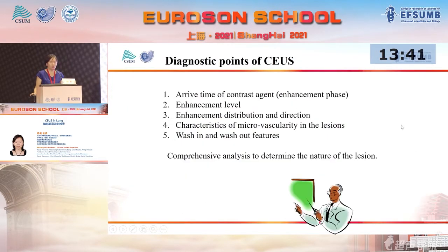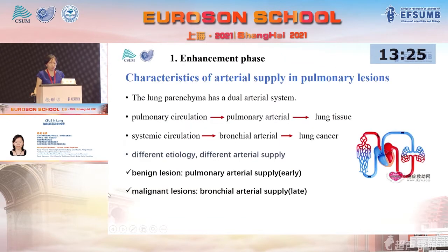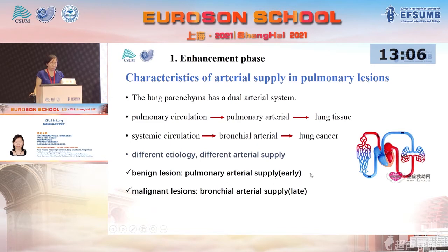The diagnostic points of CEUS include the arrival time of the contrast agent — called the enhancement phase — enhancement level, distribution, direction, and the characteristic microvascular wash-in and wash-out features. First, we look at the enhancement phase. Because the lung has a dual arterial system, different etiologies mean different arterial supply. In most benign lesions, there is pulmonary arterial supply, resulting in very early enhancement. In the majority of malignant lesions, supply is from the bronchial artery, resulting in delayed enhancement.